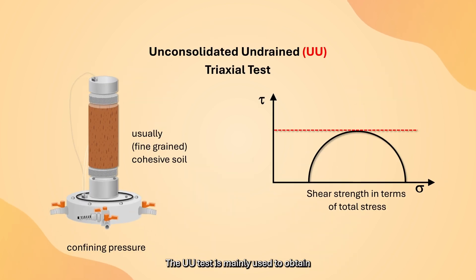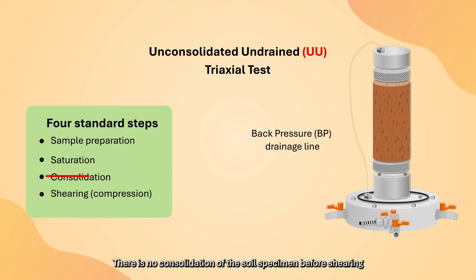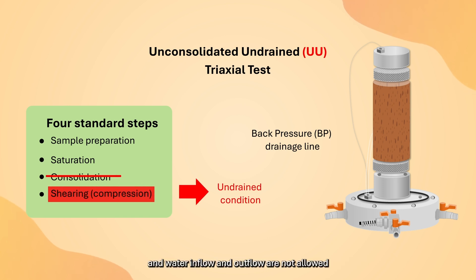The UU test is mainly used to obtain the undrained shear strength CU of a soil. There is no consolidation of the soil specimen before shearing, and water inflow and outflow are not allowed. Hence, it is a quick test.